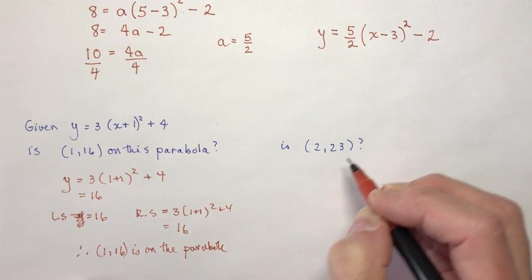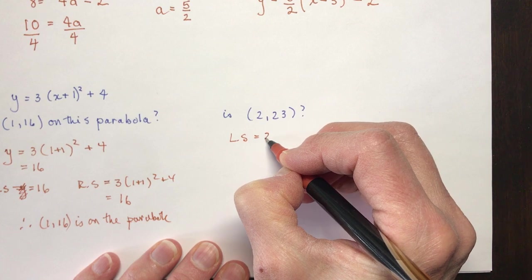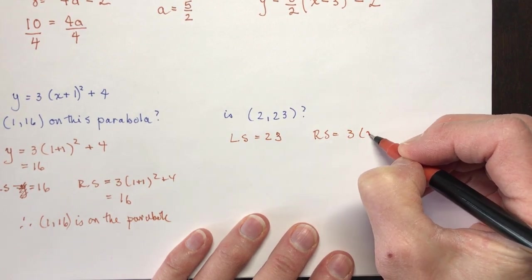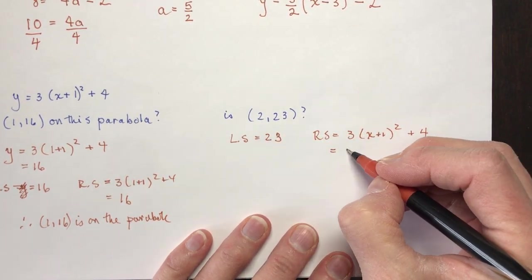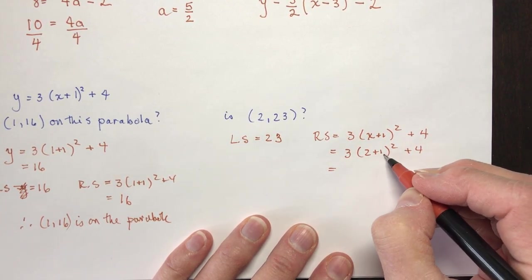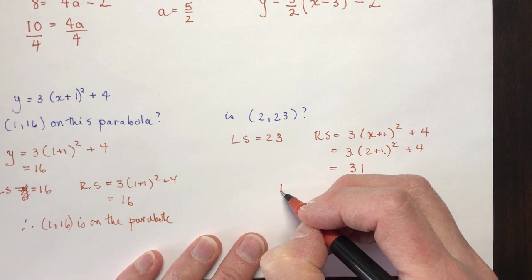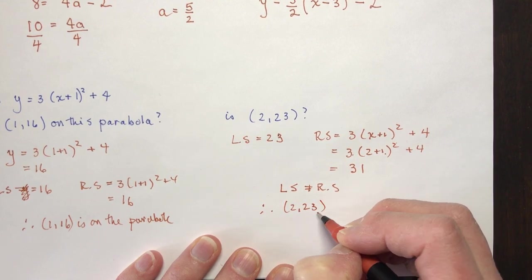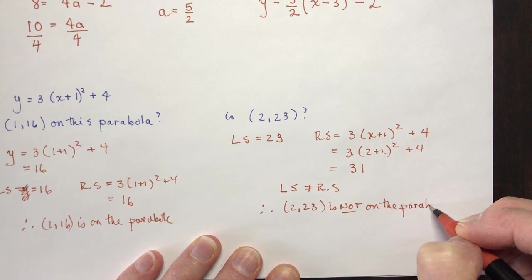And we'll do one more here is 2 and 23. So left side equals 23. I'll write it all out in a fancy way this time. And so right side equals 3(x plus 1) squared plus 4. And you're going to plug in x is 2. So that gives me 3 squared is 9 times 3 is 27 plus 4 is 31. And you'd say left side is not equal to right side. Therefore, 2, 23 is not on the parabola.